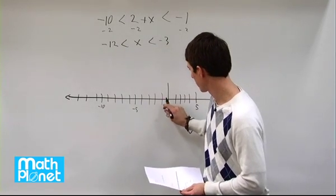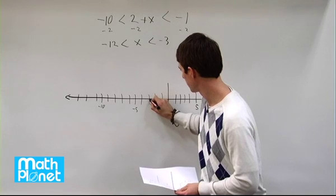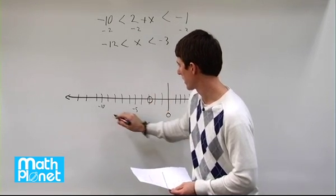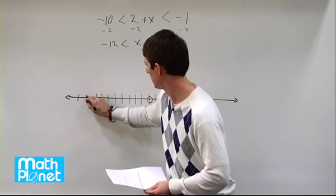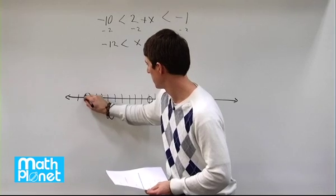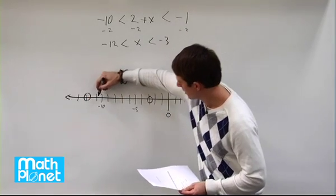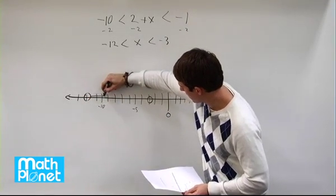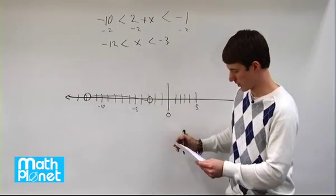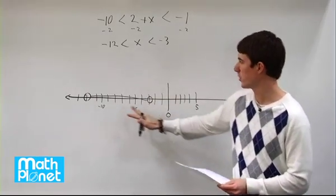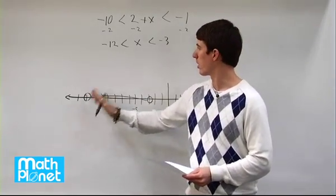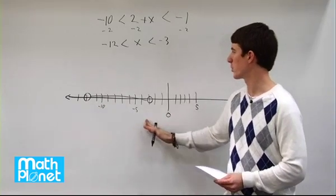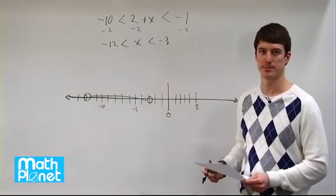Let's find those on the number line. Here we have negative 3 and negative 12, and x lies between them — every value in between. It's not equal to these two endpoints, so it's every point in between excluding negative 12 and negative 3.